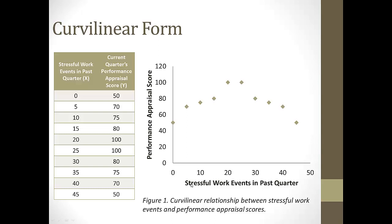Here's an example of a curvilinear relationship — stressful work events and performance. We know there's a sweet spot of stress right in the middle where if you have just the right amount of stress, your performance is highest. If you don't have very much stress at all, maybe there's nothing motivating you to perform. If you have really high levels of stress, you're overloaded and unable to perform because you're overwhelmed. Each dot in the scatter plot represents one person.